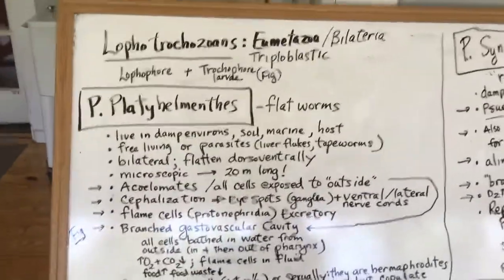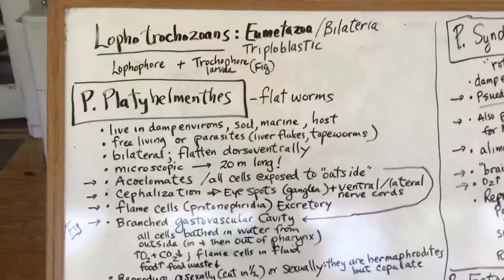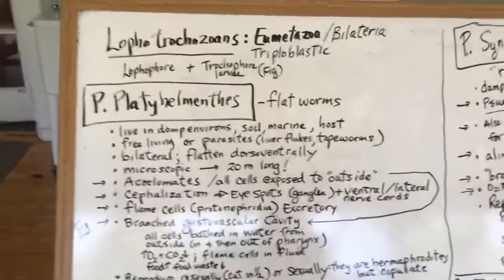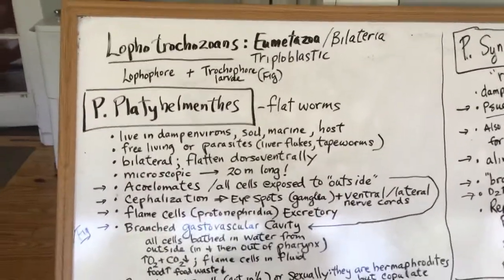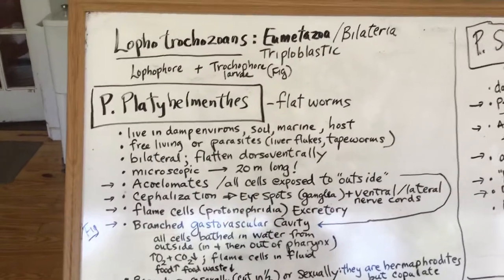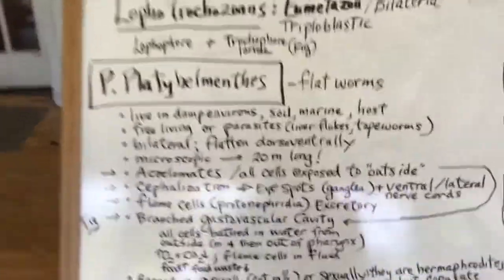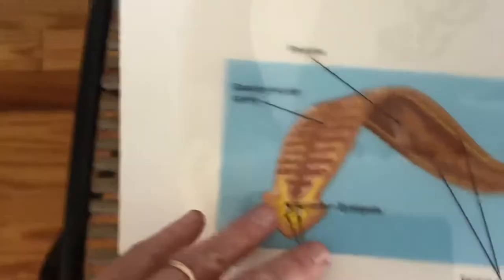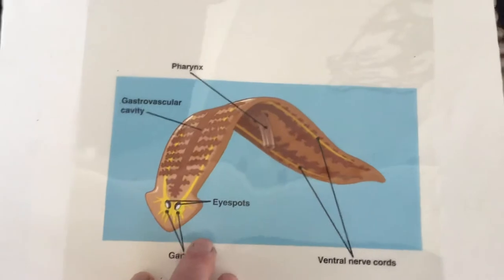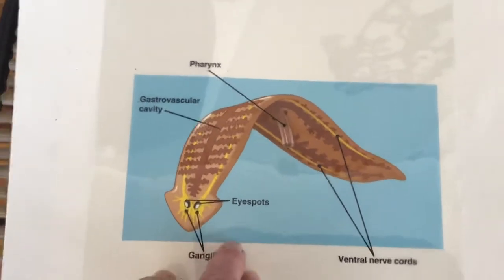The first group we're going to talk about is Platyhelminthes — these are flatworms. Flatworms live in damp environments or soil, some of them are marine, and some are parasitic living in a host. They are bilateral and flattened dorsal-ventrally, meaning they are flattened from top to bottom. They literally look like a little piece of bacon.